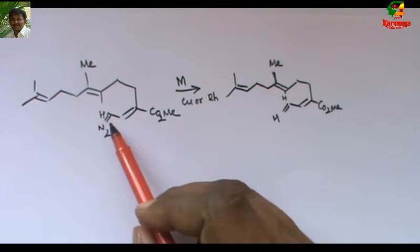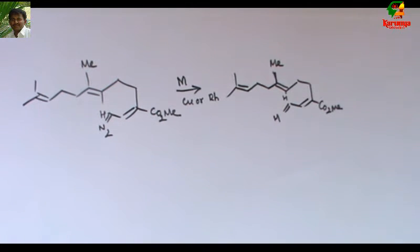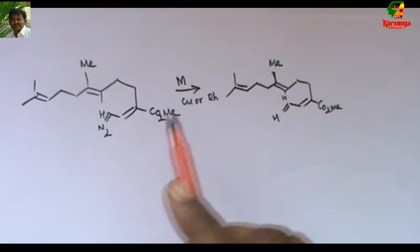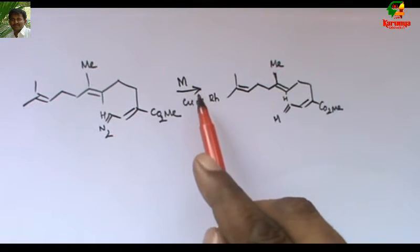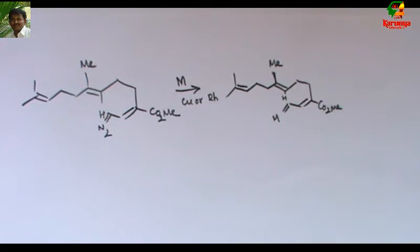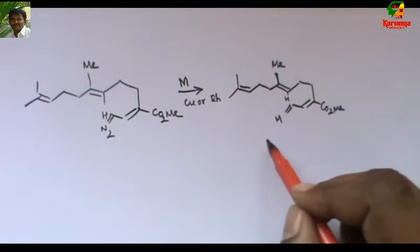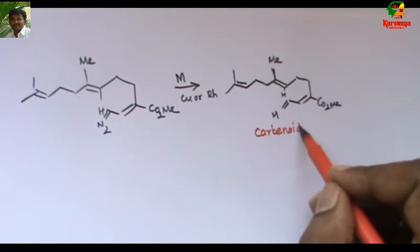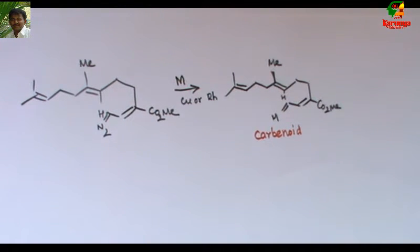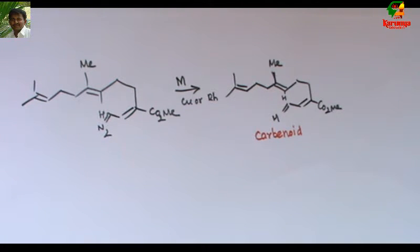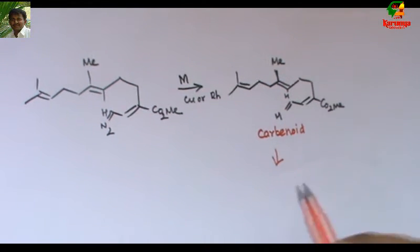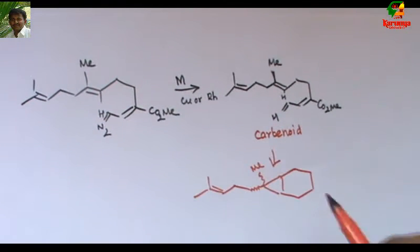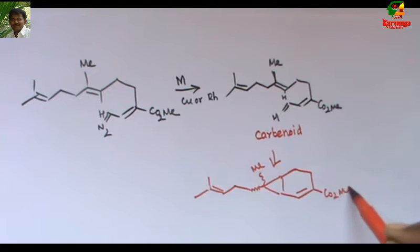You may know that diazo compound is the precursor for carbene. When this diazo compound is treated with metals, generally copper and rhodium salts are used. Rhodium tetraacetate and copper triflate or copper iodide are used generally. When treated with these metals, it gives the corresponding metal carbenoid. This metal carbenoid can undergo cyclopropanation with alkene. So the product we get will be like this.